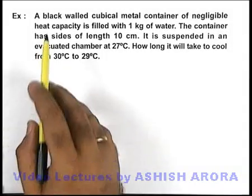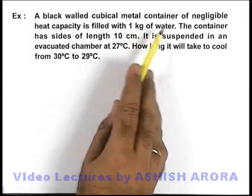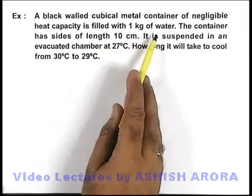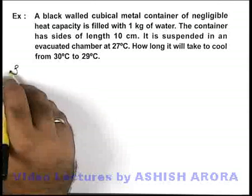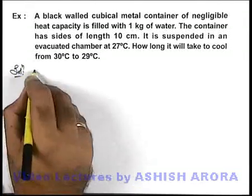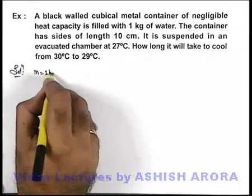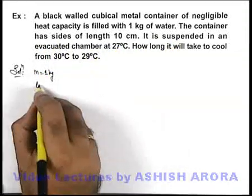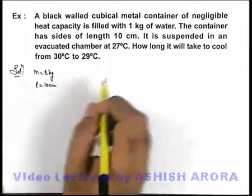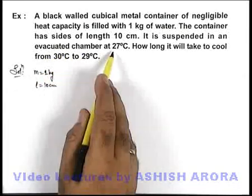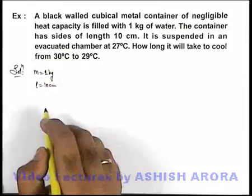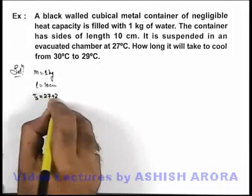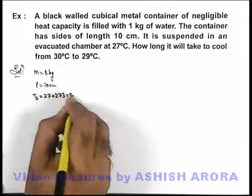In this example, we are given that a black-walled cubical metal container of negligible heat capacity is filled with 1 kg of water. The container has sides of length 10 centimeters and is suspended in an evacuated chamber at 27 degrees centigrade. The surrounding temperature is 27 plus 273, that is 300 Kelvin.